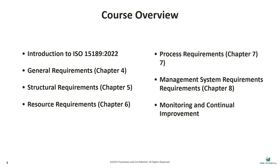Chapter 4: General Requirements. In this chapter, we focus on two critical principles: impartiality and confidentiality. How can your lab demonstrate fairness in all processes, from sample testing to result reporting? We'll explore practical ways to ensure patient information is handled securely, in compliance with regulatory requirements. These are the building blocks for establishing credibility and trust in your lab's operations. Chapter 5: Structural Requirements. This section dives into the organizational framework necessary for compliance. You'll learn how to define clear roles and responsibilities within your lab, and we'll discuss creating a structure that supports authority, accountability, and seamless operations. This ensures that everyone on your team understands their part in meeting ISO 15189 requirements.